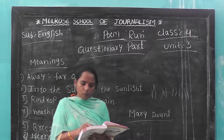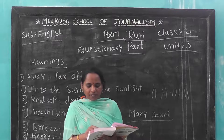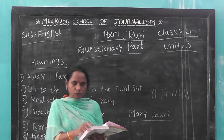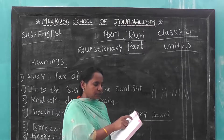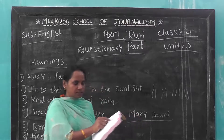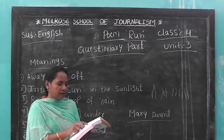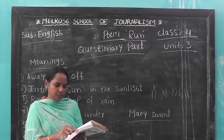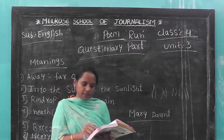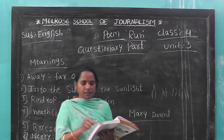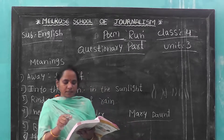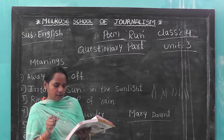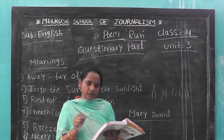Now add more words with EE and EA and put them inside the bubbles. You have to write two columns — EE words and EA words. EE words include: keep, with, week, sleep. And EA words include: leave, read, see, reap, and feet.